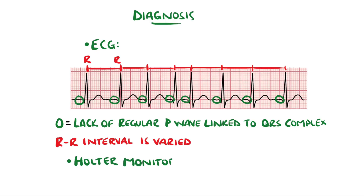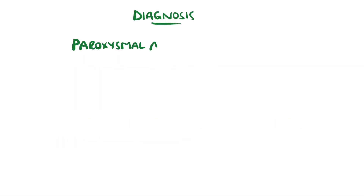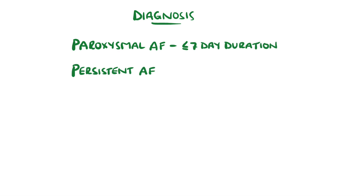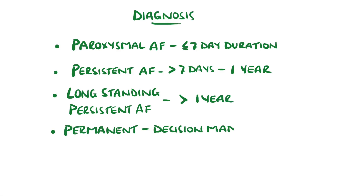However, patients are not always in atrial fibrillation, which is why longer-term Holter monitoring may be used to increase the chances of capturing the arrhythmia. It is termed paroxysmal if they have atrial fibrillation for less than seven days, persistent if it lasts between seven days and a year, long-standing persistent if beyond one year, and permanent if it is decided that there will be no attempt to revert the patient back to sinus rhythm.